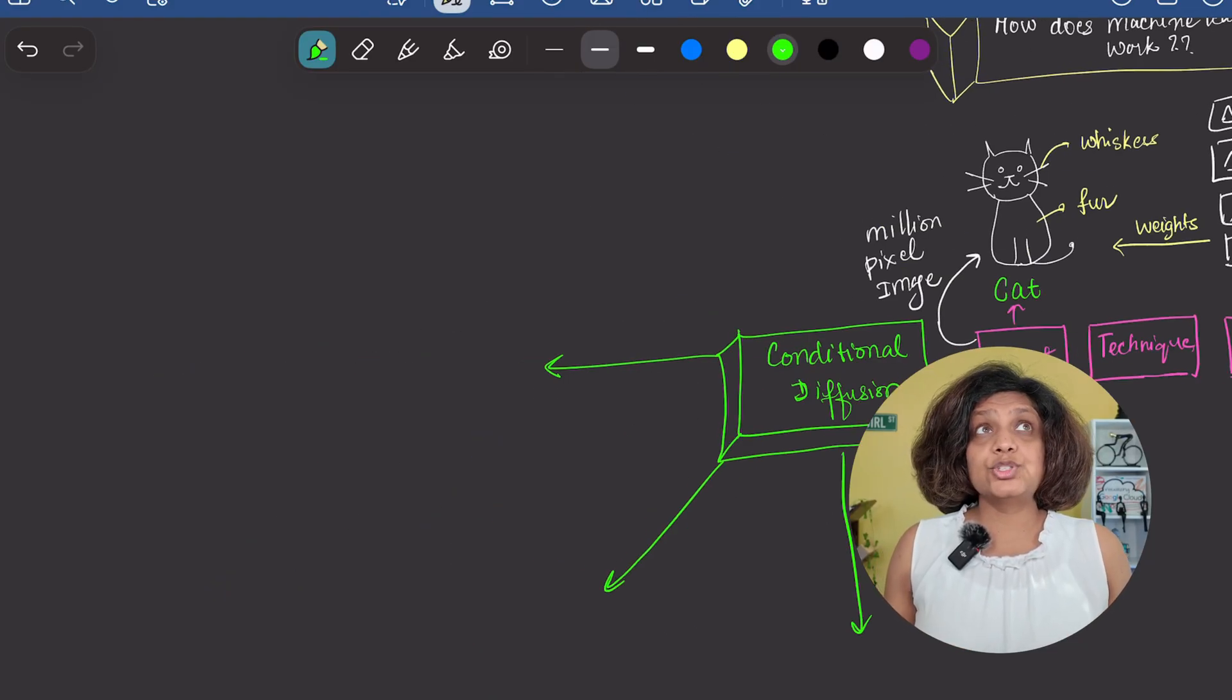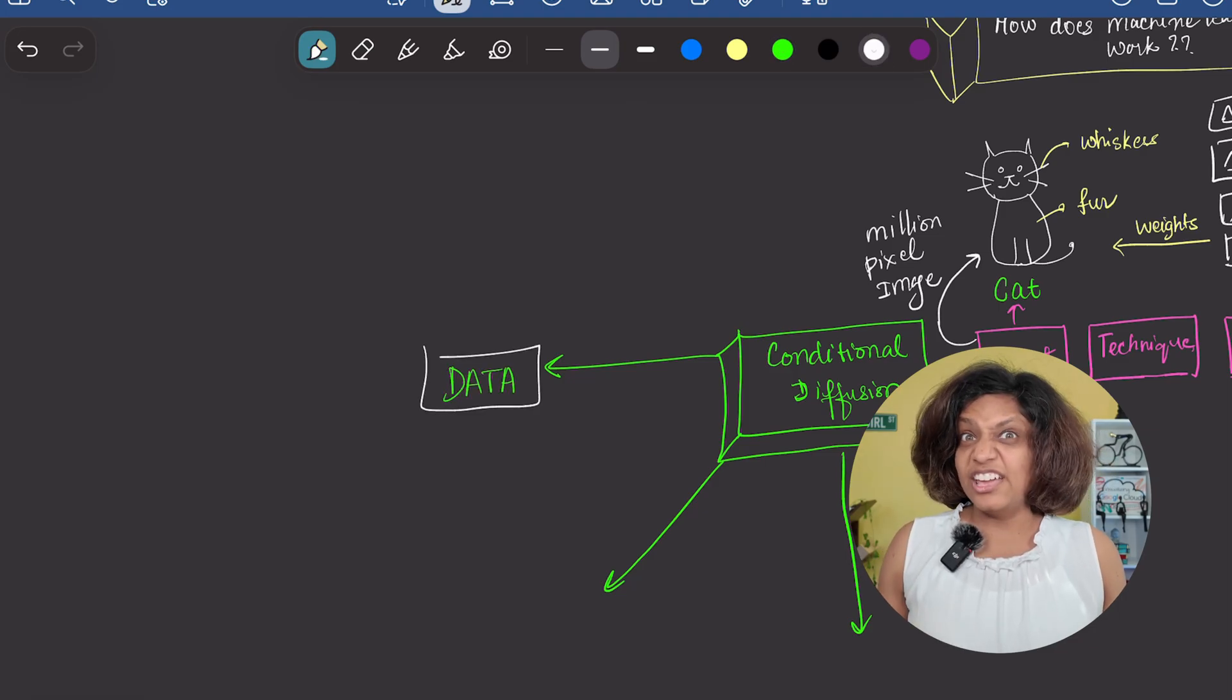The first idea solves a huge problem: data. To generate a high quality image, you would need a massive data set where every single pixel is labeled. That is impossible.